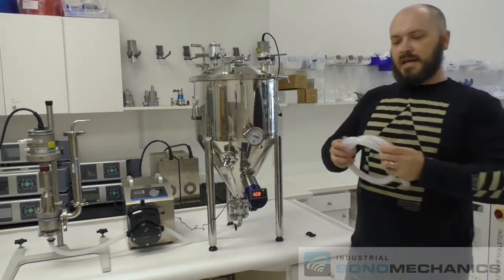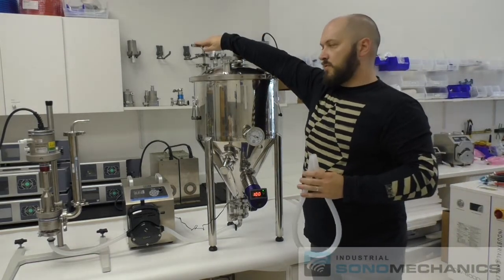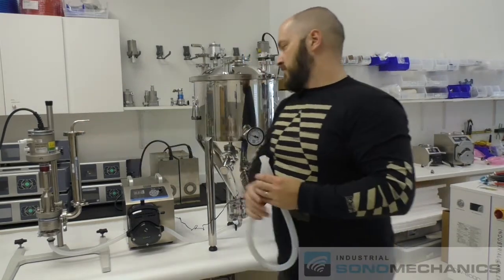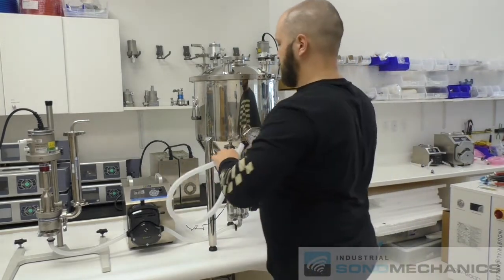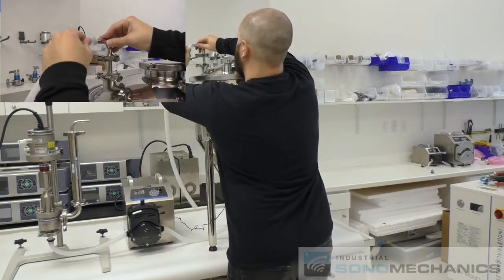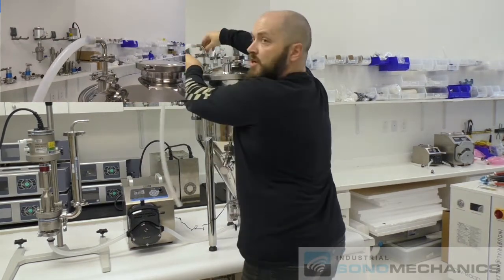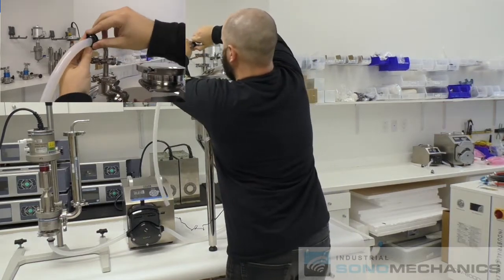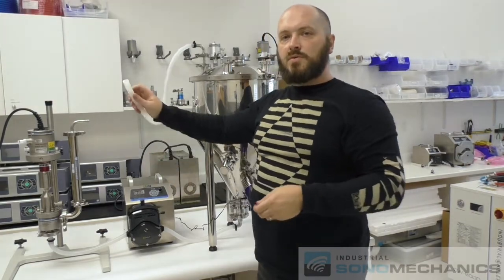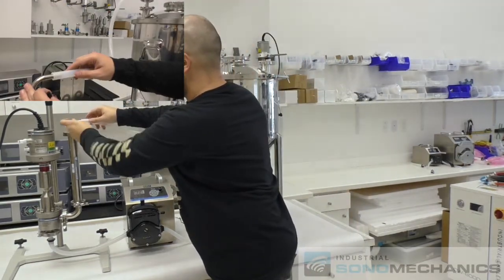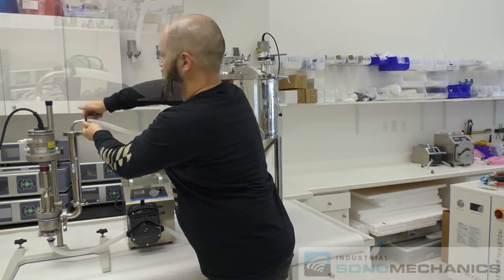The last thing we're going to do is we're going to attach the return hose from the return port to the ultrasonic stack heat exchanger. We use a clip to secure it. We grab the other side of the hose to the heat exchanger, secure it with a clip.